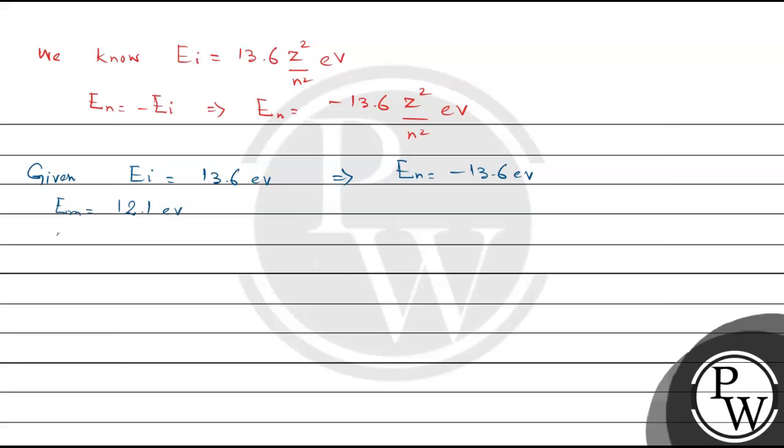Taking the energy difference, E_f = -13.6 + 12.1 = -1.5 electron volt. We know E_f = E_n/n², that implies n² × E_f = E_n.